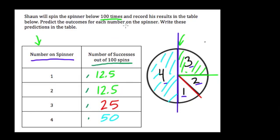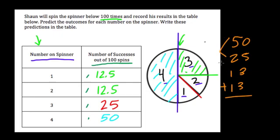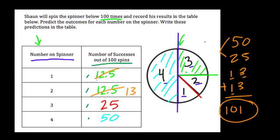This is where it gets challenging. You can't round both 12.5 values up to 13, because then you'd have 50 plus 25 plus 13 plus 13, which equals 101 — and we only have 100 spins to work with. So one of the two should be rounded up and the other down. It's arbitrary since they're equal in size, but let's go with 50, 25, 13, and 12 so the numbers fall in a neat order.